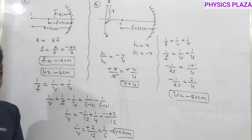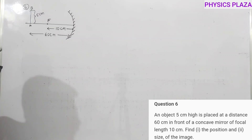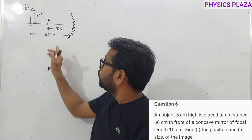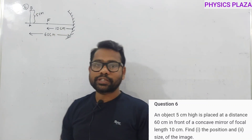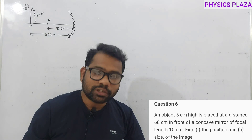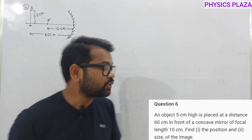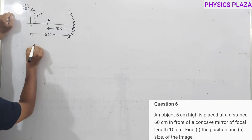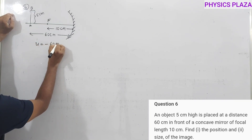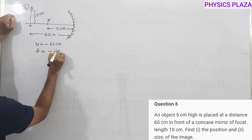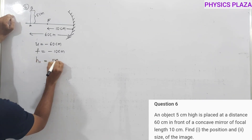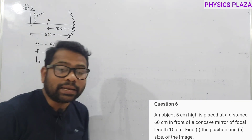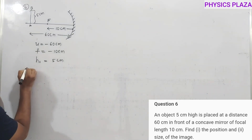Sixth numerical: an object of height 5 cm is placed in front of a concave mirror of focal length 10 cm at a distance of 60 cm. Calculate image distance and size of the image. Data: u = −60 cm, f = −10 cm, h₀ = 5 cm. First, calculate image distance using the mirror formula.